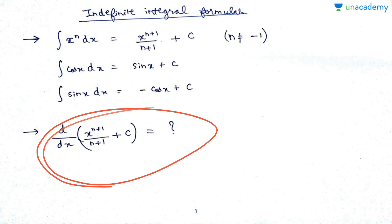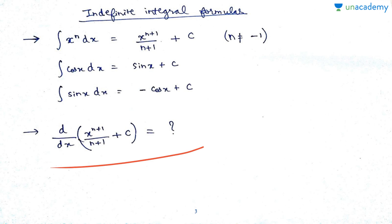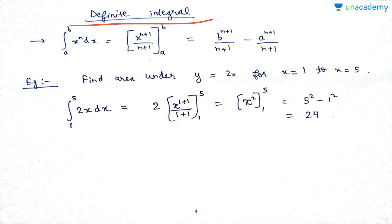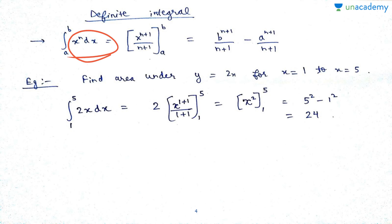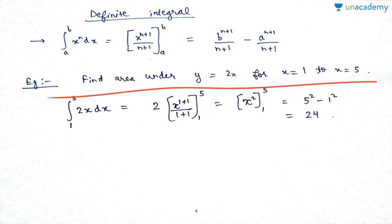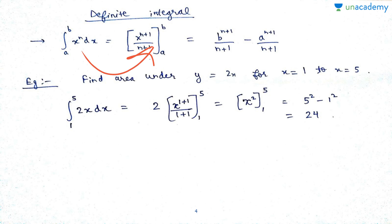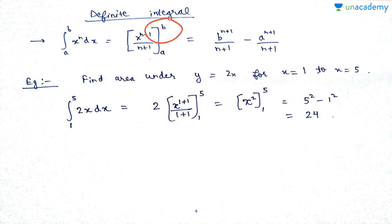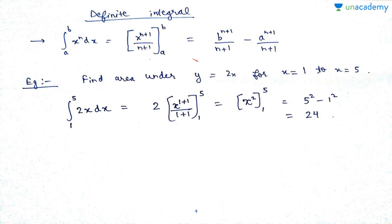Integration is the opposite of derivation. Now let's talk about the definite integral. It is written with an integration sign and limits a to b. The formula gives x^(n+1) / (n+1) evaluated between limits a and b. To evaluate it, you substitute the upper limit b into the variable, then subtract the result with the lower limit a substituted.